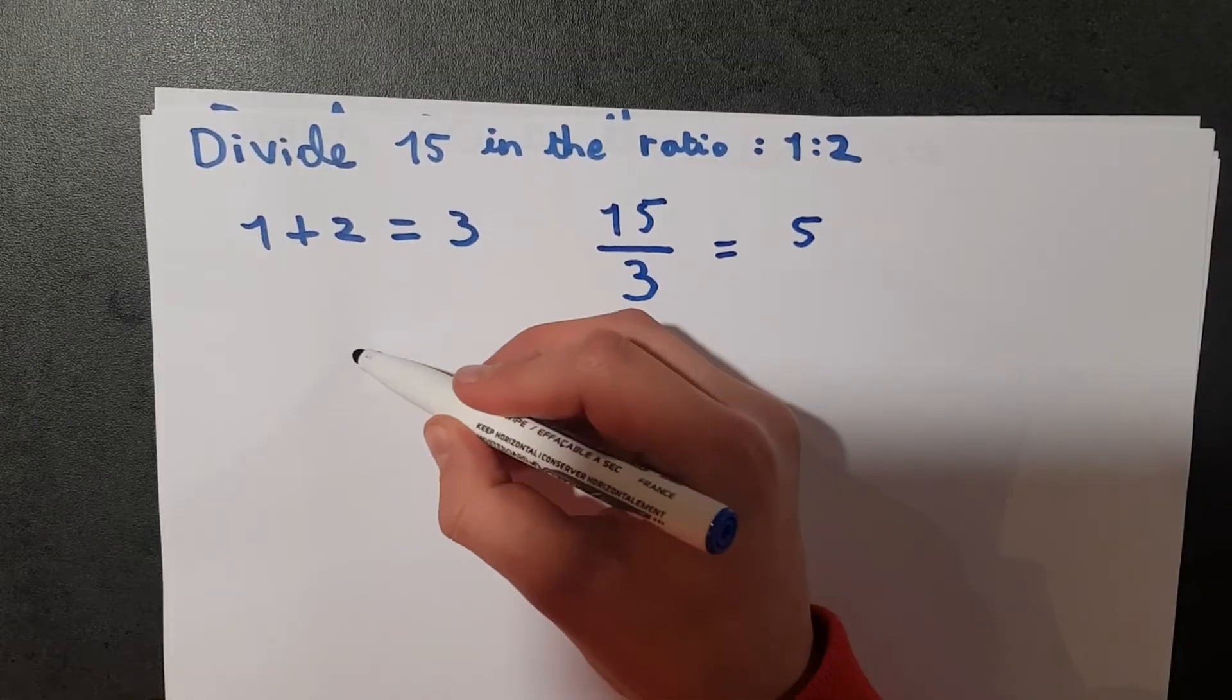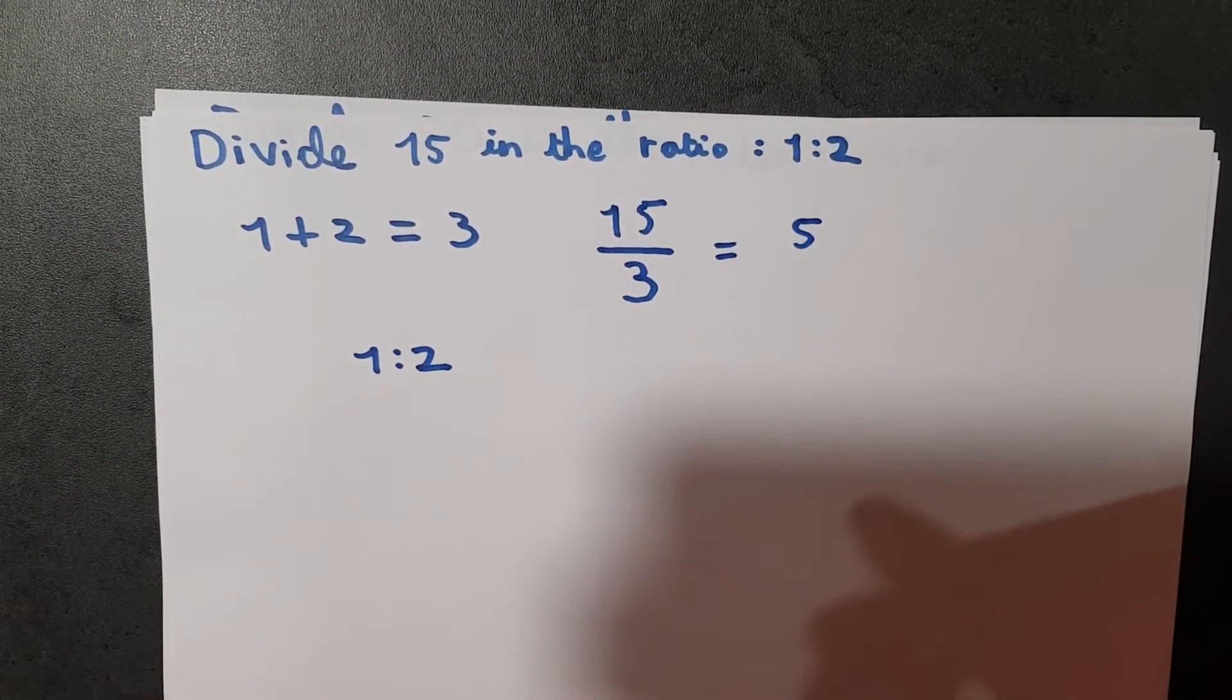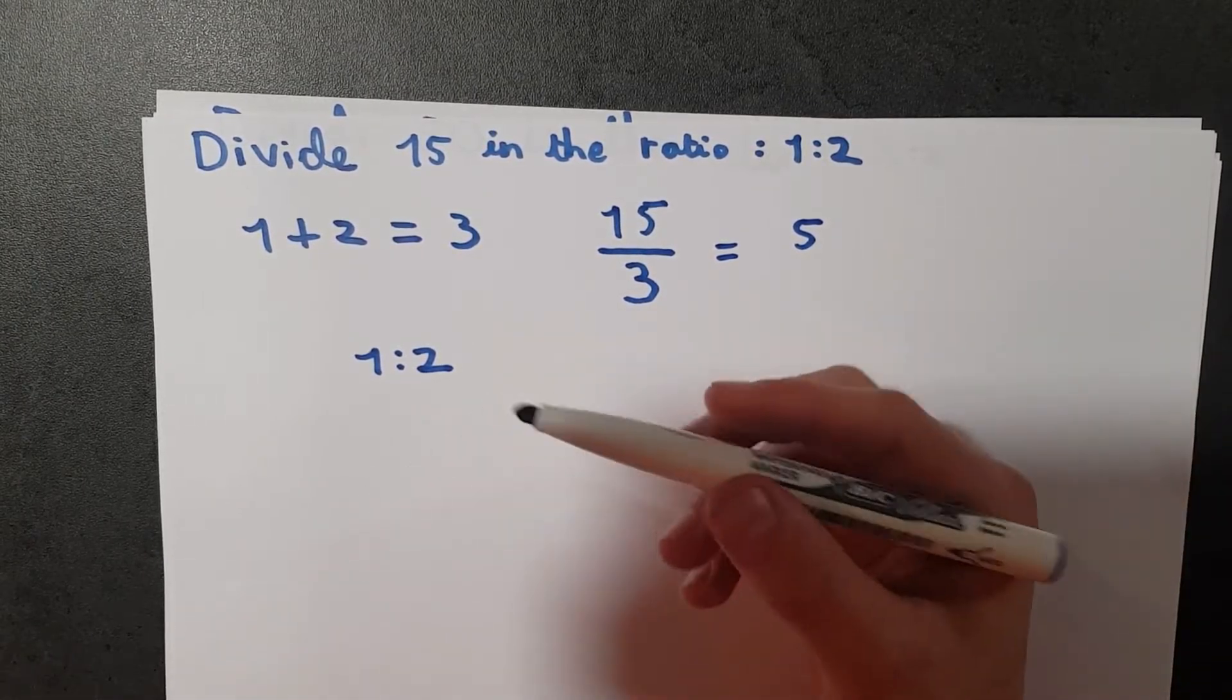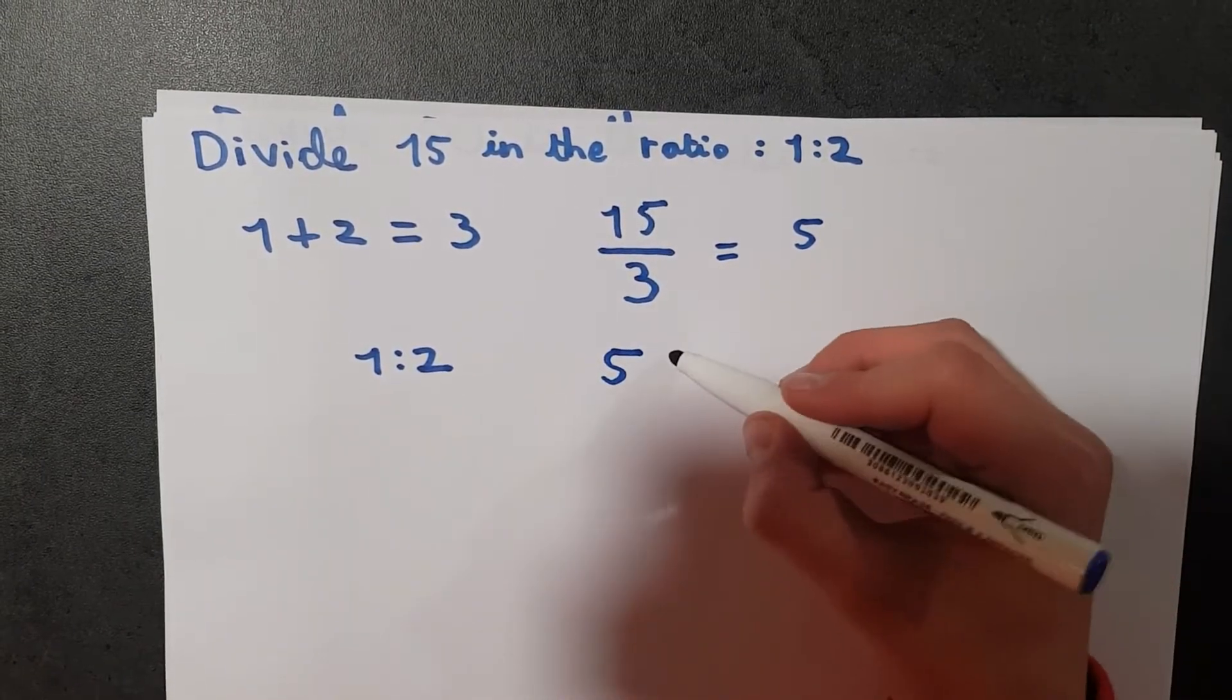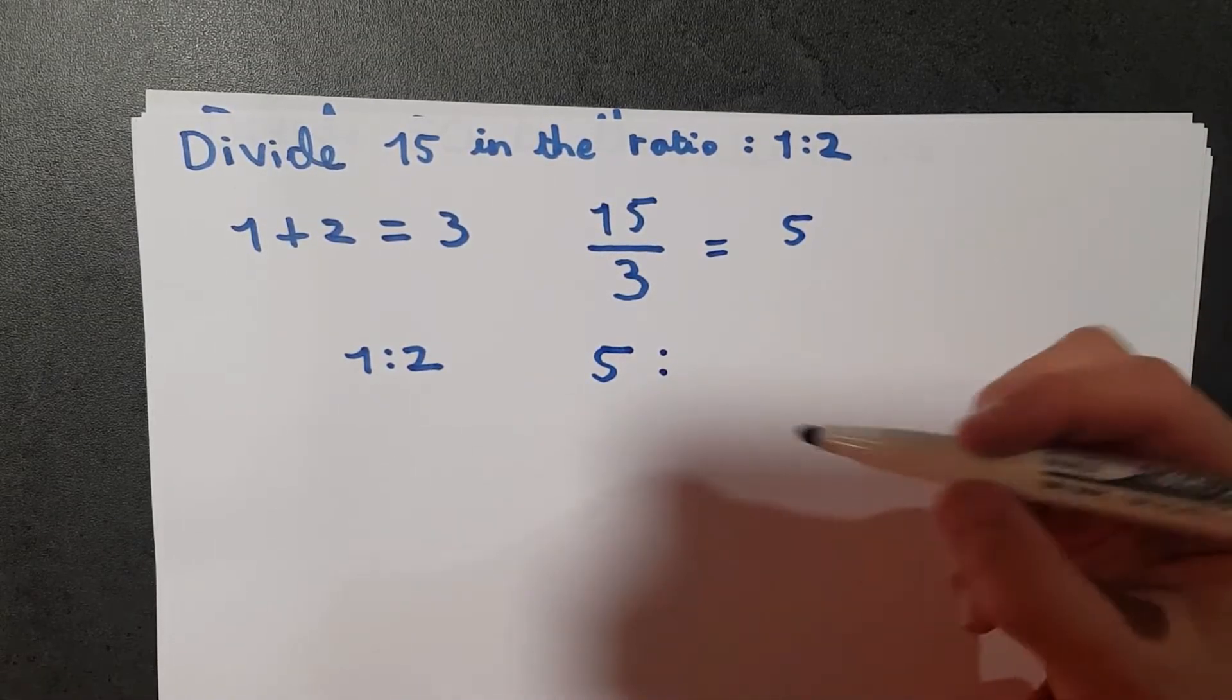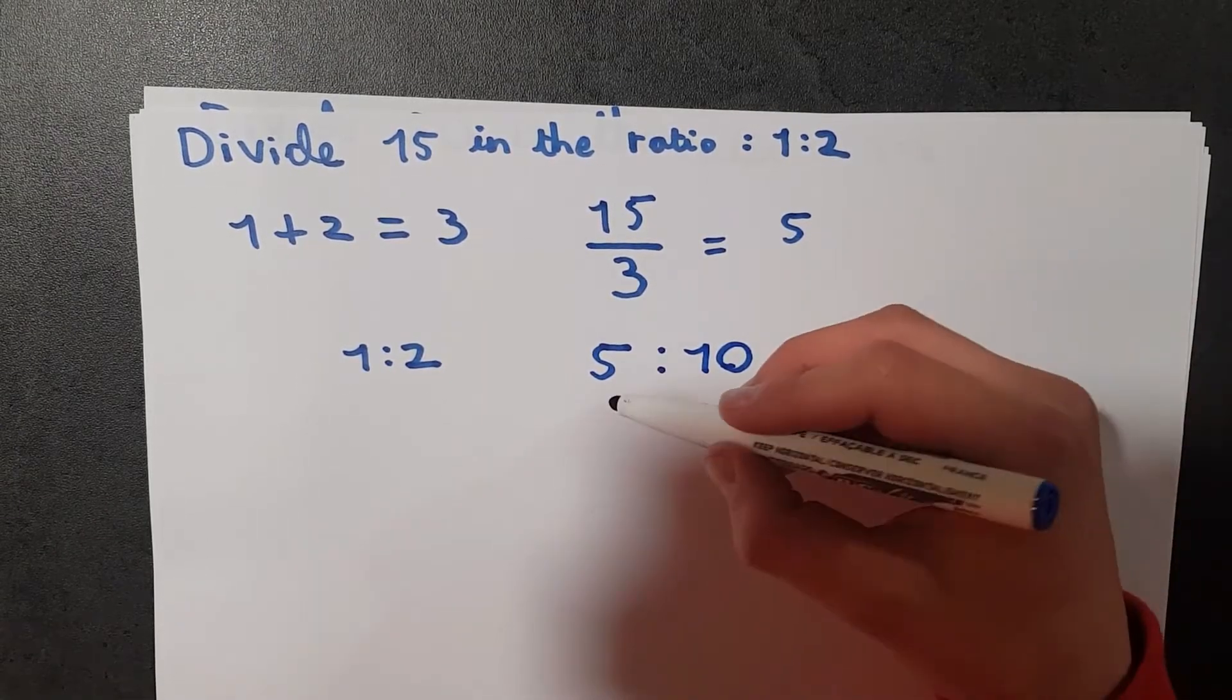must take the ratio which we started off with and we must multiply 5 by each one of the ratios. So here it's 5 times 1, start off with 5, and now again 5 times 2, so 10. And that is the ratio of the question. Now let's try a second question. So here we